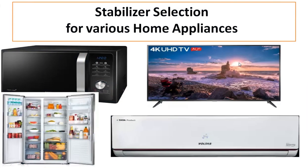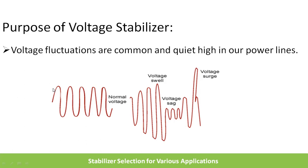Welcome back. In this video I'm going to discuss stabilizer selection for various home appliances — and this method can be used for selecting a stabilizer for any equipment. Here you can see some home appliances connected to stabilizers: a TV along with a set-top box and home theater, air conditioners, refrigerators, and less often ovens are connected to voltage stabilizers.